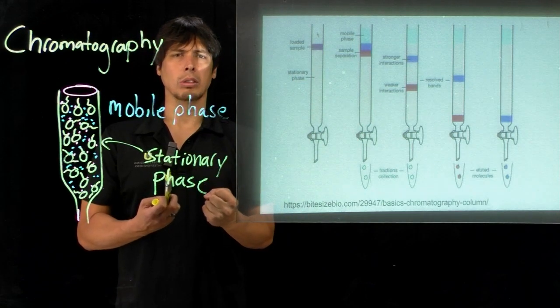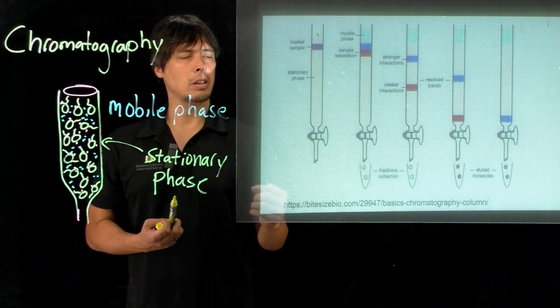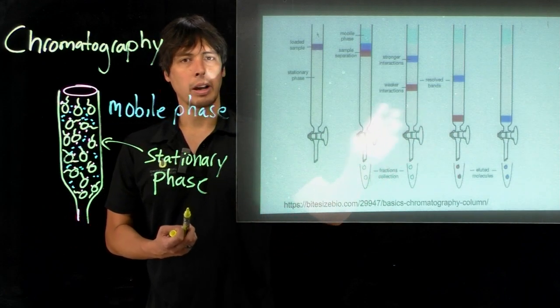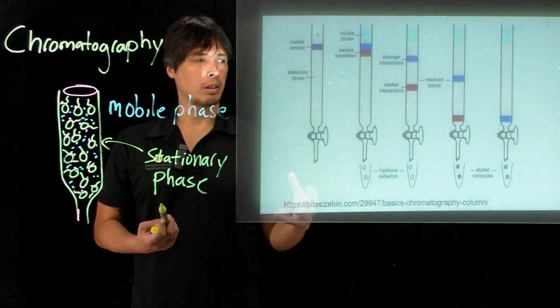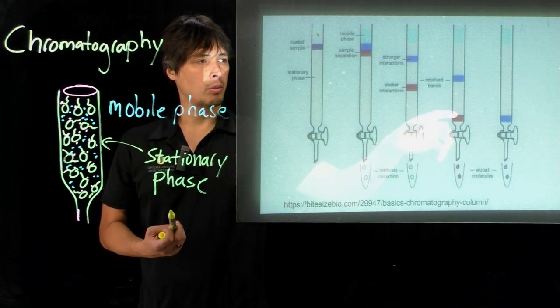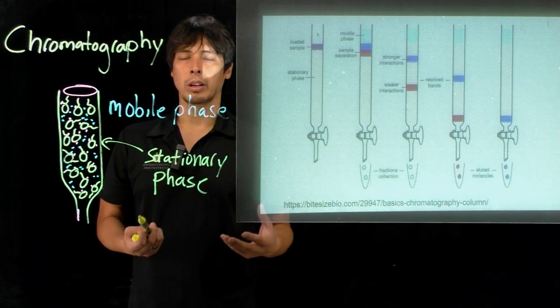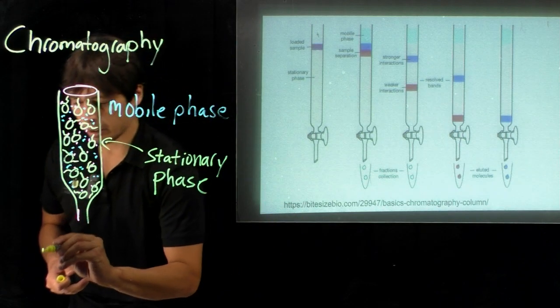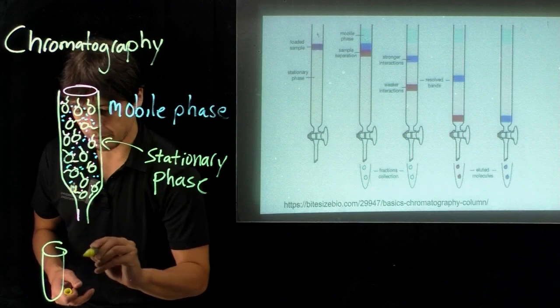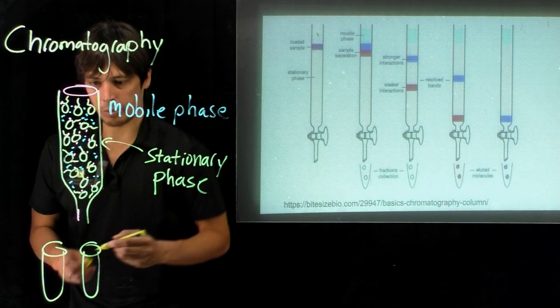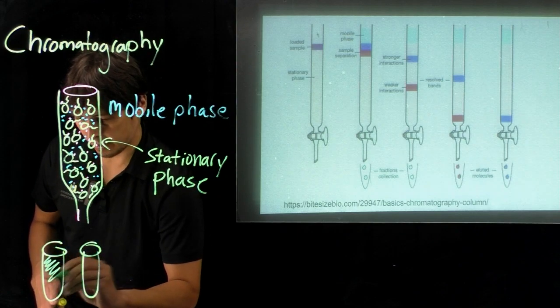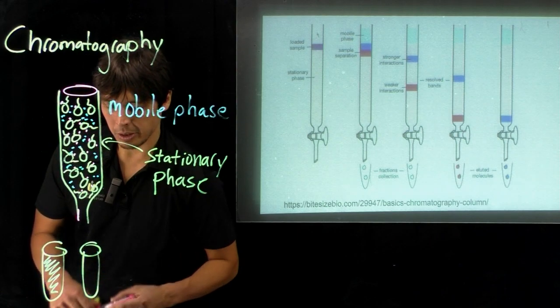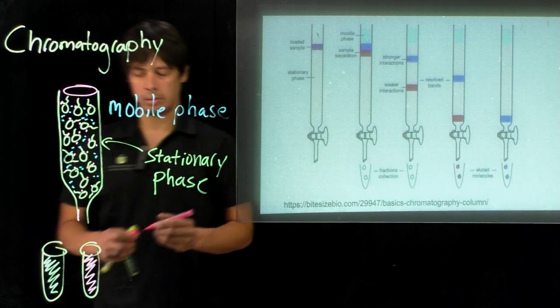things that interact really strongly with the beads. By the speed of the mobility of the proteins, one will elute faster and we can collect it, and then we end up with our fractions. We can separate, for instance, two proteins from each other.